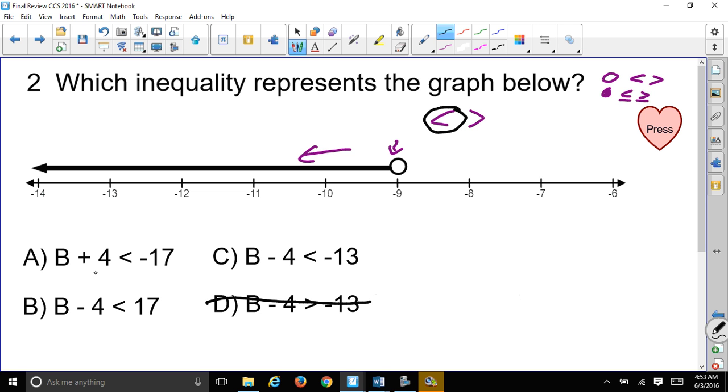So that makes choice D gone because it's pointing towards the right. But I still have to figure out where are they getting this negative 9 from? Well, if we have B + 4 < -17, let's make believe we had an equal sign there, so I would subtract 4 from both sides and my 4 would cancel out. I'd have B < -17 - 4. Would that give me negative 9? No, that would give me negative 21, so that can't be it.